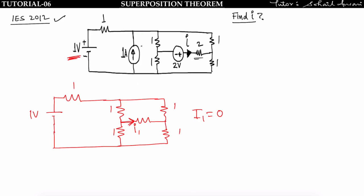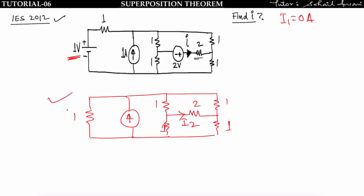Now take the 1A current source alone and short circuit both the 1V and 2V sources. In this case the bridge is also balanced, so i2 = 0A flowing through the 2Ω branch.